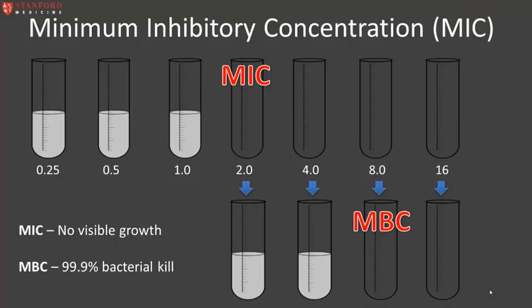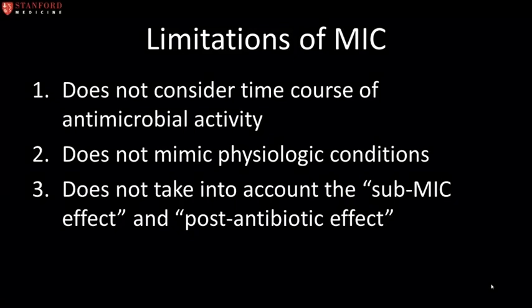The delineation of pharmacodynamic properties of an antibiotic requires knowledge of multiple factors. The most commonly used pharmacodynamic measures of in vitro antimicrobial activity are the minimum inhibitory concentration (MIC) and the minimum bactericidal concentration (MBC). The MIC describes the lowest concentration of antibiotic capable of inhibiting the visible growth of an organism in vitro, while MBC is the lowest concentration to achieve 99.9 percent bacterial kill. Although MIC and MBC are excellent predictors of potency, they do not account for the time course of antimicrobial activity nor mimic physiologic conditions such as intermittent antibiotic administration, which results in the target pathogen being subjected to a constantly changing concentration of drug.